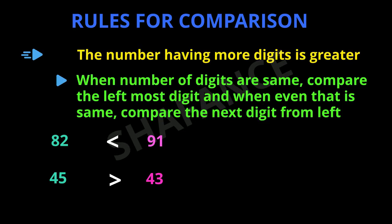Let us take one more example. The first number is 857 and the second number is 855. The leftmost digit is the same — that is 8 in both cases. The second digit from the left is also the same — that is 5. But the third digit from the left is 7 in the first case and 5 in the second case. So 7 is greater than 5, meaning 857 is greater than 855.